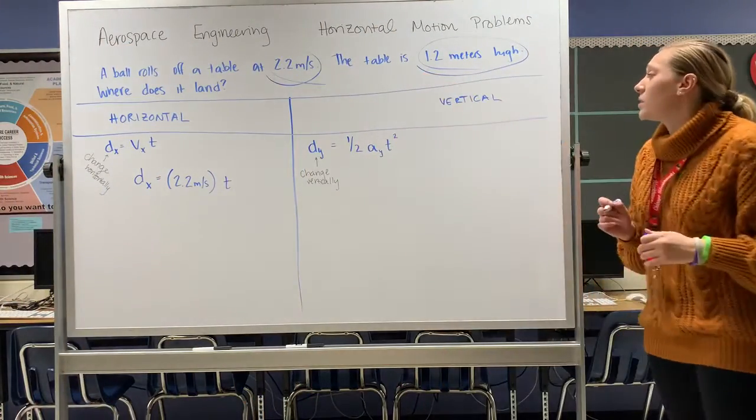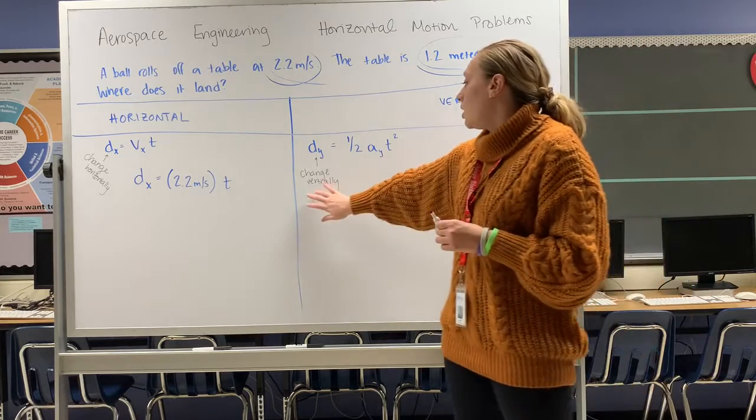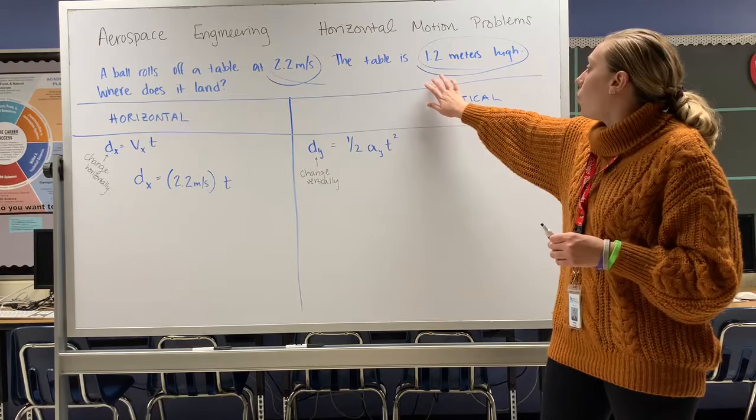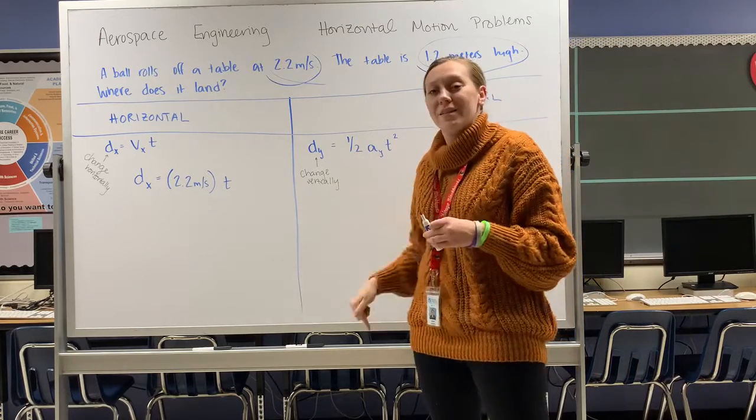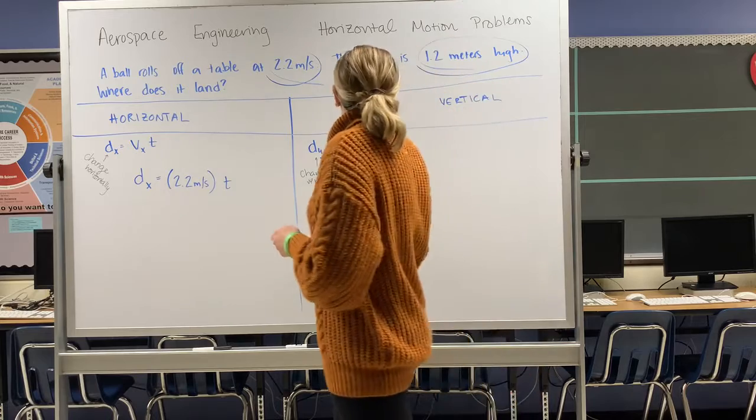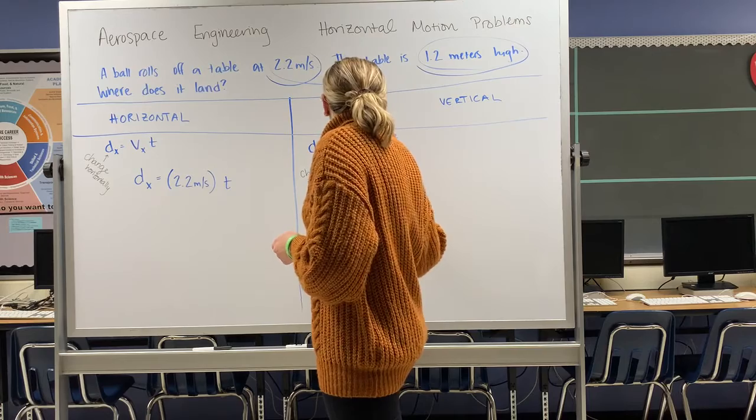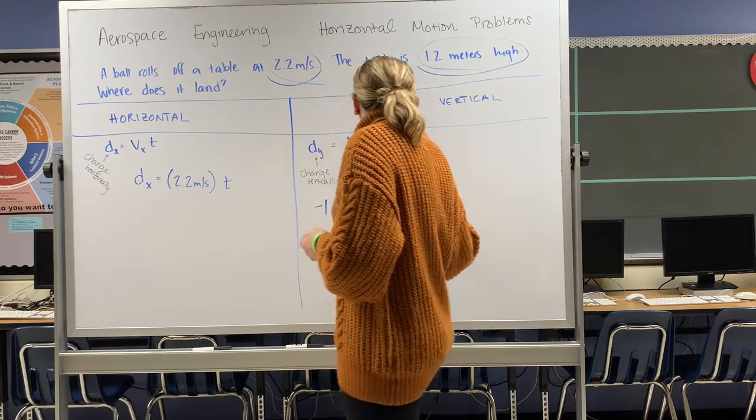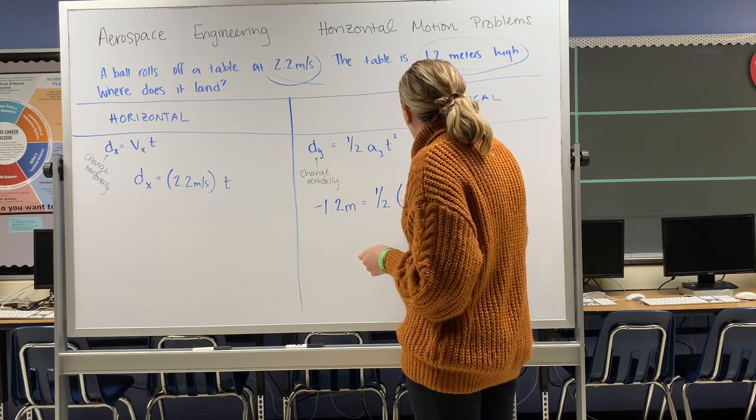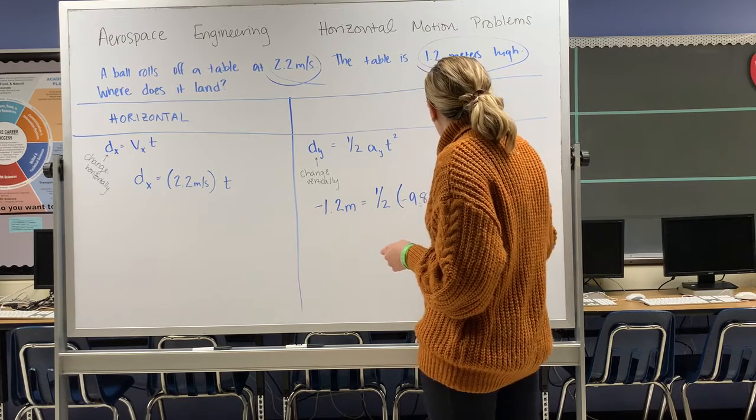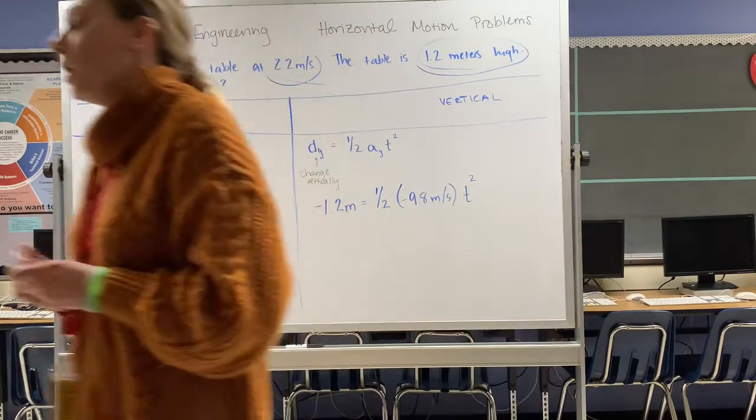My table is 1.2 meters high. This means that my change vertically is negative 1.2 meters because the ball is falling down to the earth. I'm going to plug in what I know. I have negative 1.2 meters equals one-half. I know my acceleration due to gravity will always be negative 9.8 meters per second squared, and I do not know what time is. That is what I am solving for.